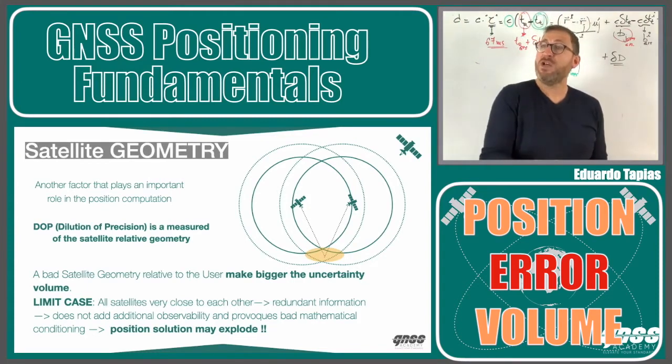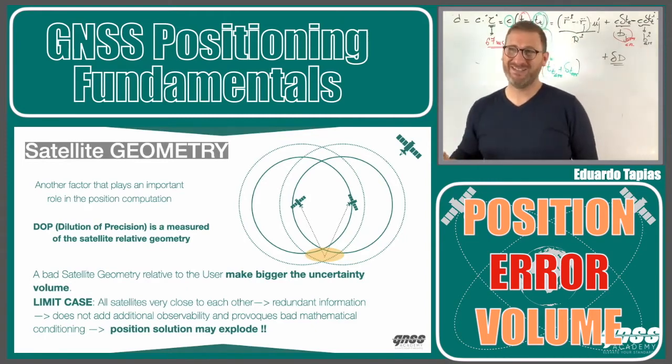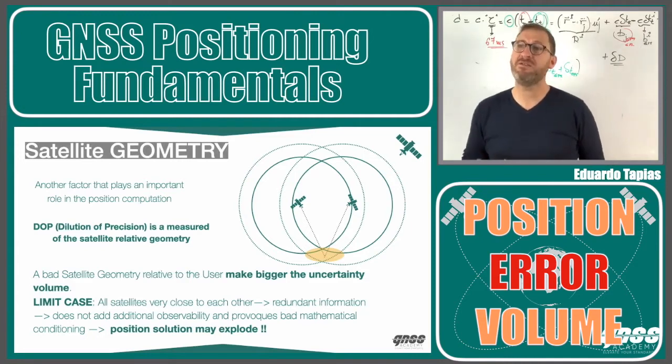Then to solve for this equation, we will have some bad conditioning in my system. Then this bad conditioning is coming from the geometry of the satellites.